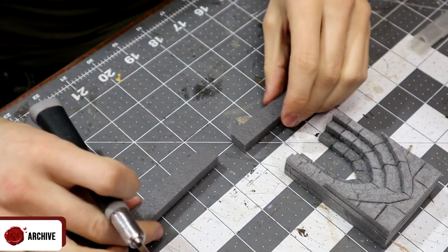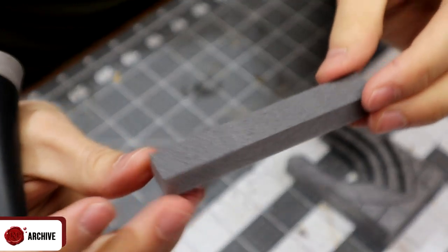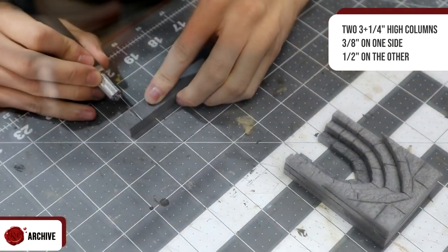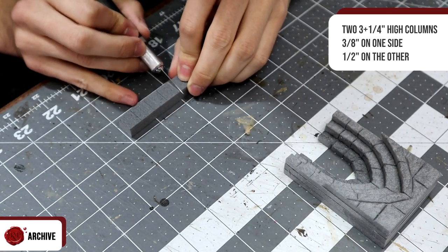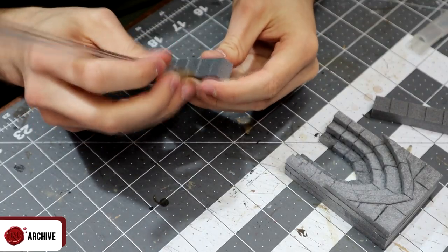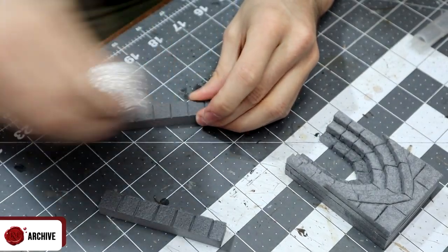Once you've got that we can add the details around it. First we'll need some three and a quarter inch high columns, three eighths of an inch on one side by half an inch on the other. I textured this on one side as stone with half inch high blocks and then hot glued it to the sides of the arch.